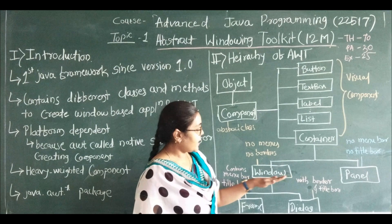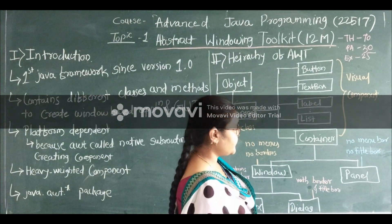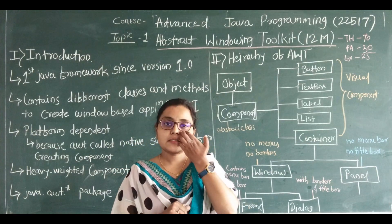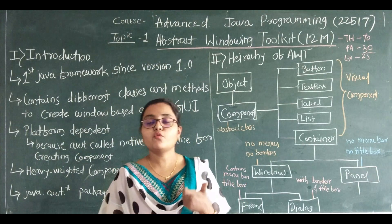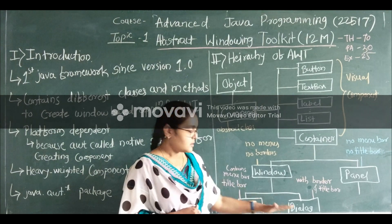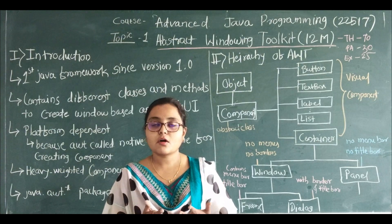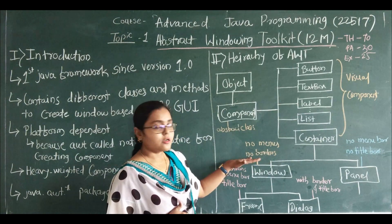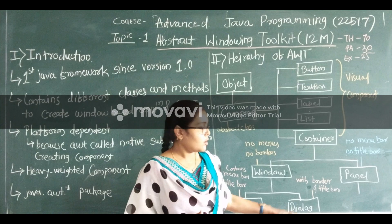The Container has two subclasses: one is Window and second is Panel. Window is the base class — it does not directly create an object. If we want to create a window we should use the subclass Frame or Dialog. You cannot directly create the Window; it sits on the desktop. The Window has no menu bars and no borders. Windows can be created by using Frame, Dialog, or Panel.